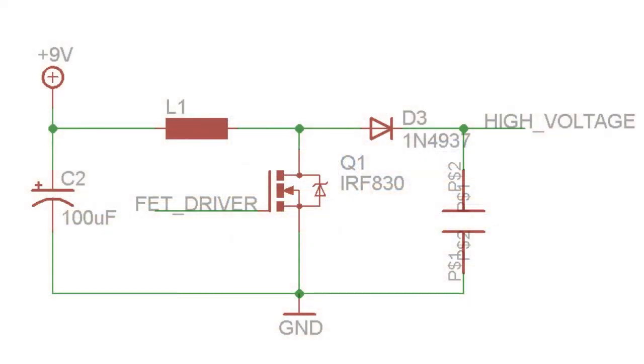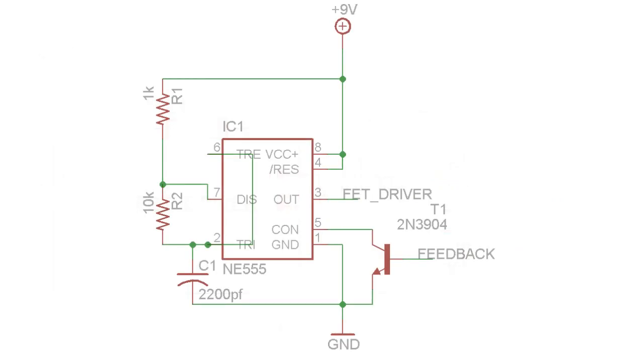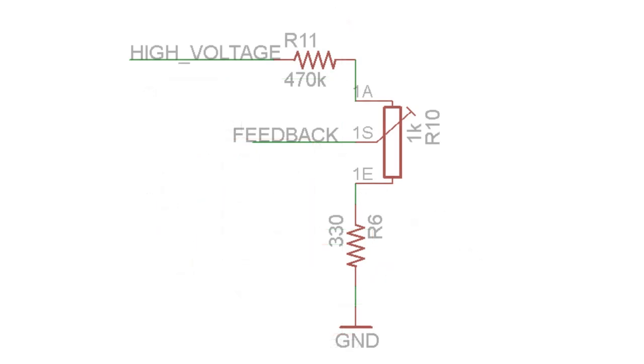The high voltage is achieved using a boost converter. The switch on the boost converter is driven by a 555 timer, and the high voltage is fed back through a resistor divider using a potentiometer to adjust the feedback.